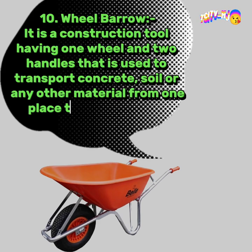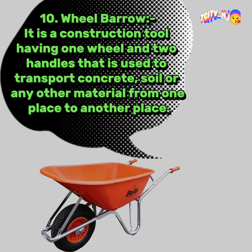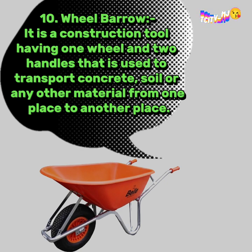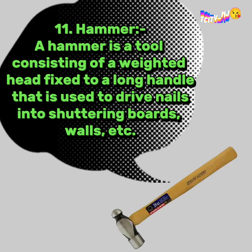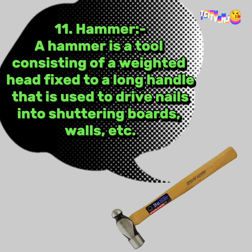9. Crowbar: a crowbar is a metal tool used mainly for removing the nails from shuttering boards. 10. Wheel Barrow: it is a construction tool having one wheel and two handles that is used to transport concrete, soil, or any other material from one place to another. 11. Hammer: a hammer is a tool consisting of a weighted head fixed to a long handle that is used to drive nails into shuttering boards, walls, etc.